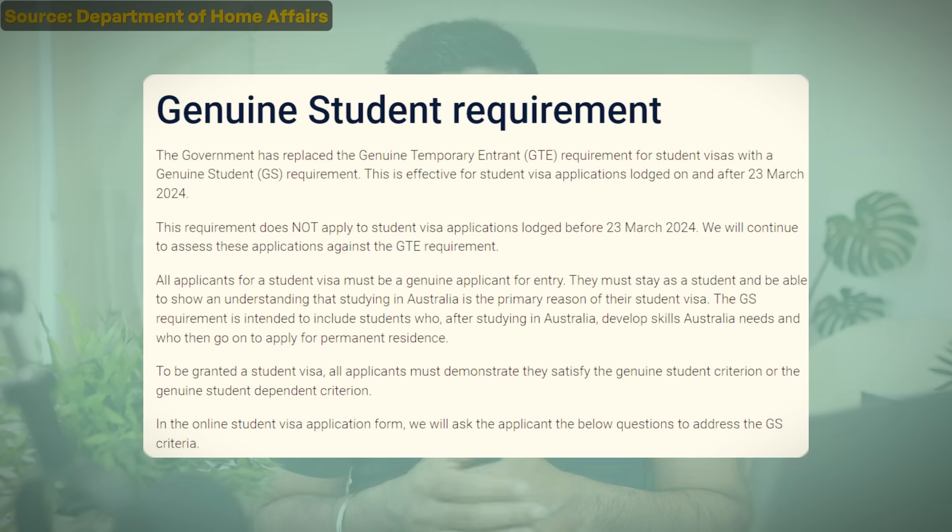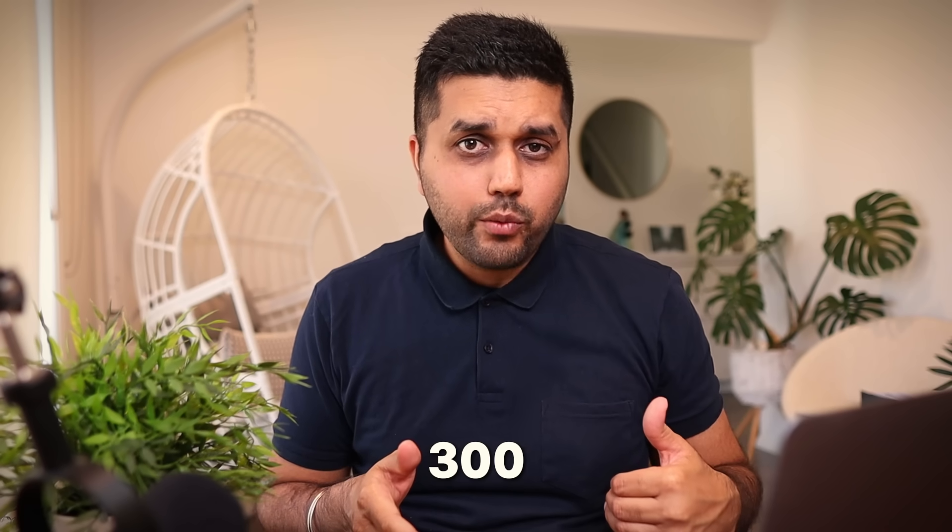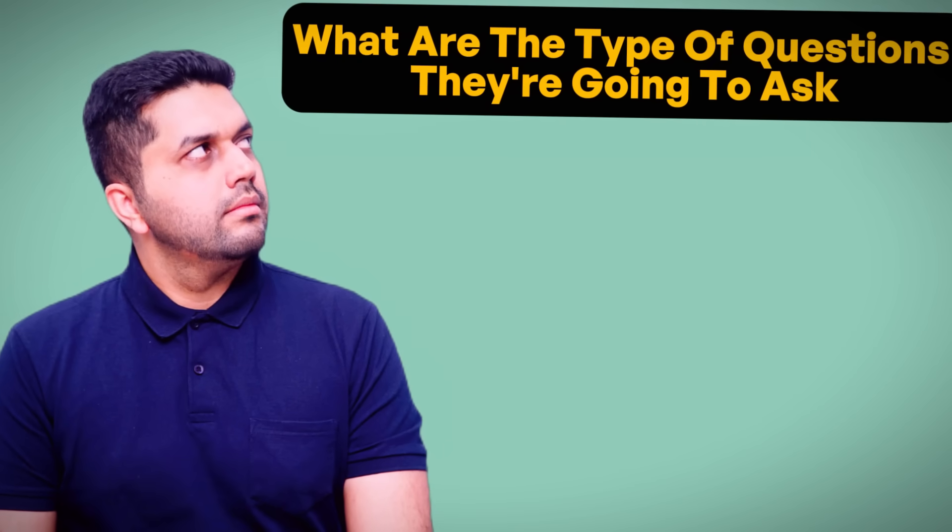In terms of format, in the GTE statement you were required to write a statement of around 300 words. That will be replaced by a set of targeted questions that you will need to answer in your online visa application - written answers, not verbal. The maximum word limit is 150 words per question, which is a significant change, giving you more space to explain each point.